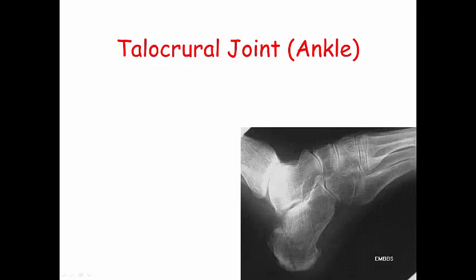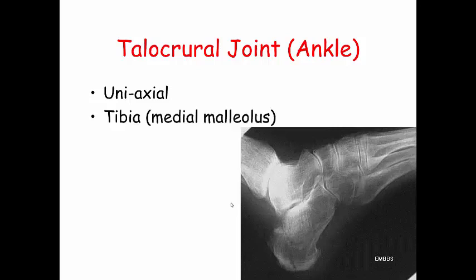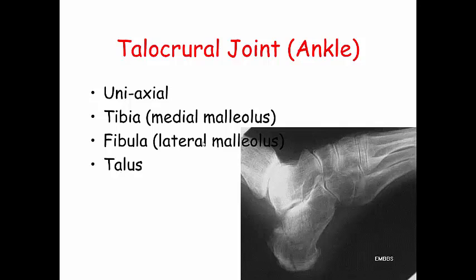Let's talk about the ankle complex. First, you have your ankle joint, which is between the talus and the tibia and the fibula. It's uniaxial, and the motions are dorsiflexion and plantar flexion. The tibia is on the medial side, and you can palpate your medial malleolus. Your fibula is on the lateral side, and you can palpate your lateral malleolus. And then you have your talus, so the tibia and fibula come together and kind of create a little rectangle over the top of your talus.